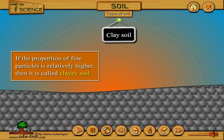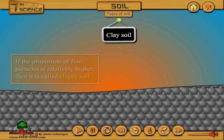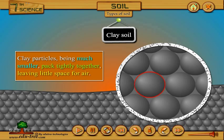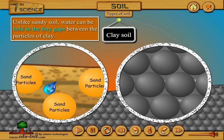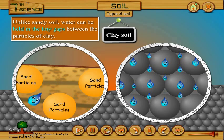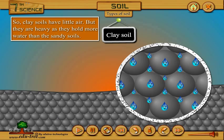If the proportion of fine particles is relatively higher, it is called clay soil. Clay particles, being much smaller, pack tightly together, leaving little space for air. Unlike sandy soil, water can be held in the tiny gaps between the particles of clay. So clay soils have little air, but they are heavy as they hold more water than the sandy soils.